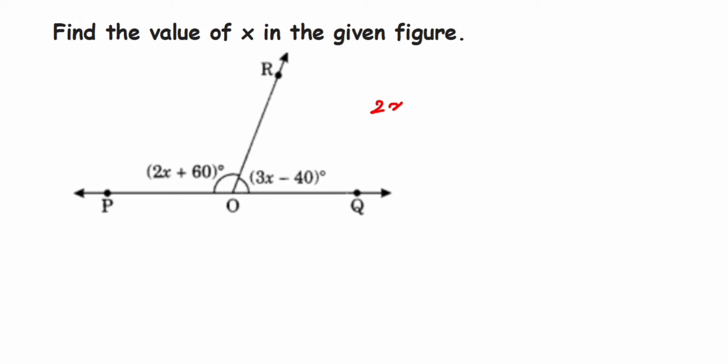Here, so here the first angle is 2x plus 60 and the second angle is 3x minus 40. I'm adding these two angles. So if I add these two angles, the sum should be equal to 180 degrees because you are forming a linear pair.